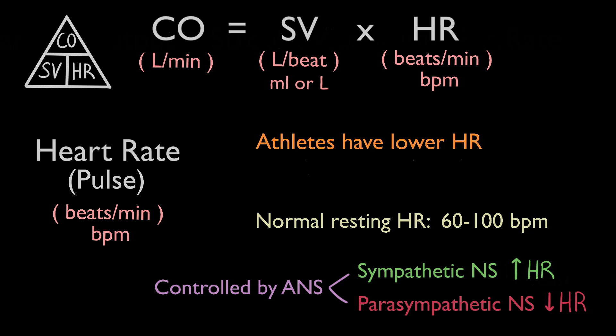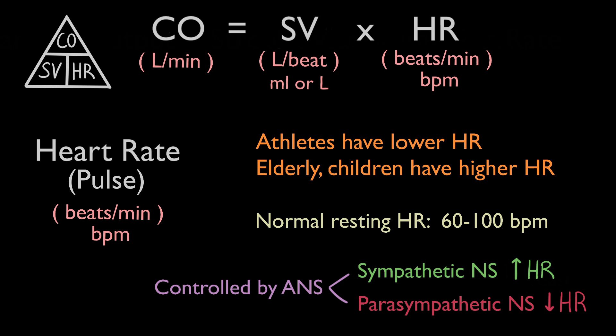Athletes tend to have lower resting heart rates because their heart muscles are stronger and capable of pumping more blood with each contraction while still providing adequate circulation. The elderly and children will normally have higher resting heart rates because their heart muscles are weaker and cannot circulate the blood as efficiently, so their hearts need to beat faster to provide adequate circulation.